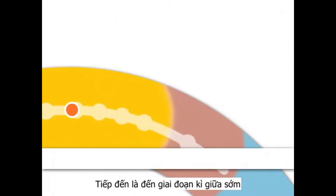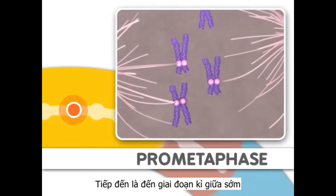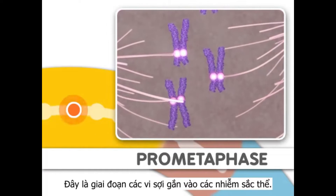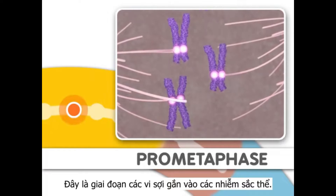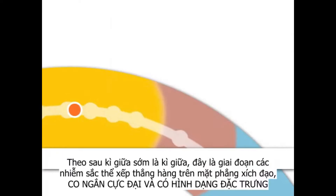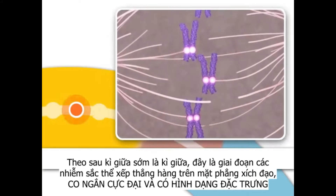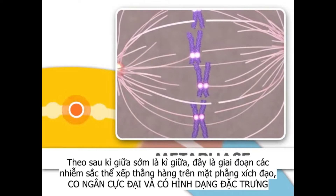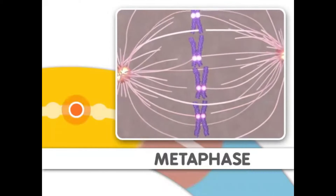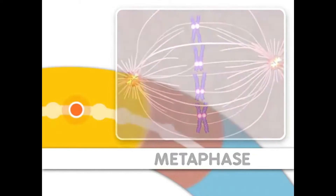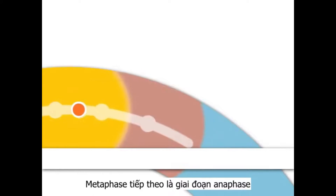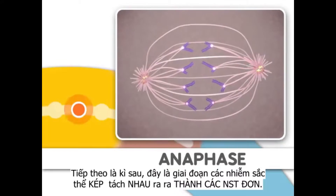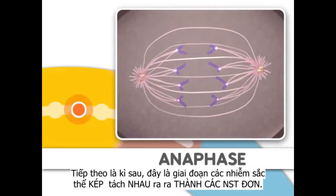Next comes prometaphase, where microtubules attach to the chromosomes. This step is followed by metaphase, where the chromosomes align. Metaphase is followed by anaphase, where the chromosomes separate.